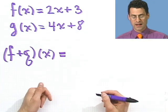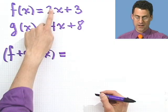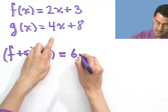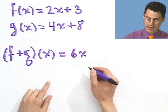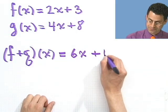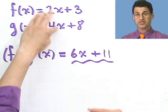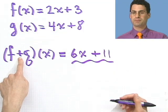Well, you just add these functions. And we already talked about how to add algebraic expressions. You add the like terms. I have 2x and I put in 4x. That would be then 6x. And 8 and 3 is plus 11. So there's a new function I made just by taking these two functions and combining them. In this case, combining it with addition.